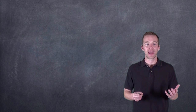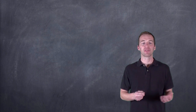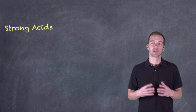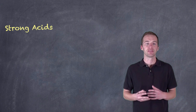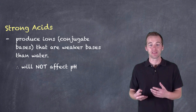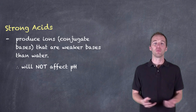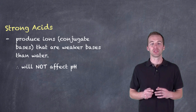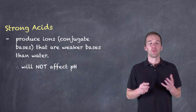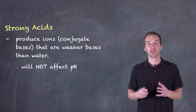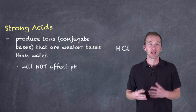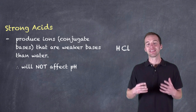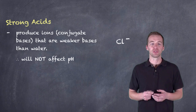Let's take a look at our component acids and bases. If we have a strong acid, we have to note that it's going to produce ions that are conjugate bases, and that these conjugate bases of strong acids are going to be weaker than water. Therefore, they're not going to affect the pH of the solution. For example, when we take a look at hydrogen chloride, the chloride ion is the conjugate base of hydrogen chloride, and this is not going to affect the pH of the solution.